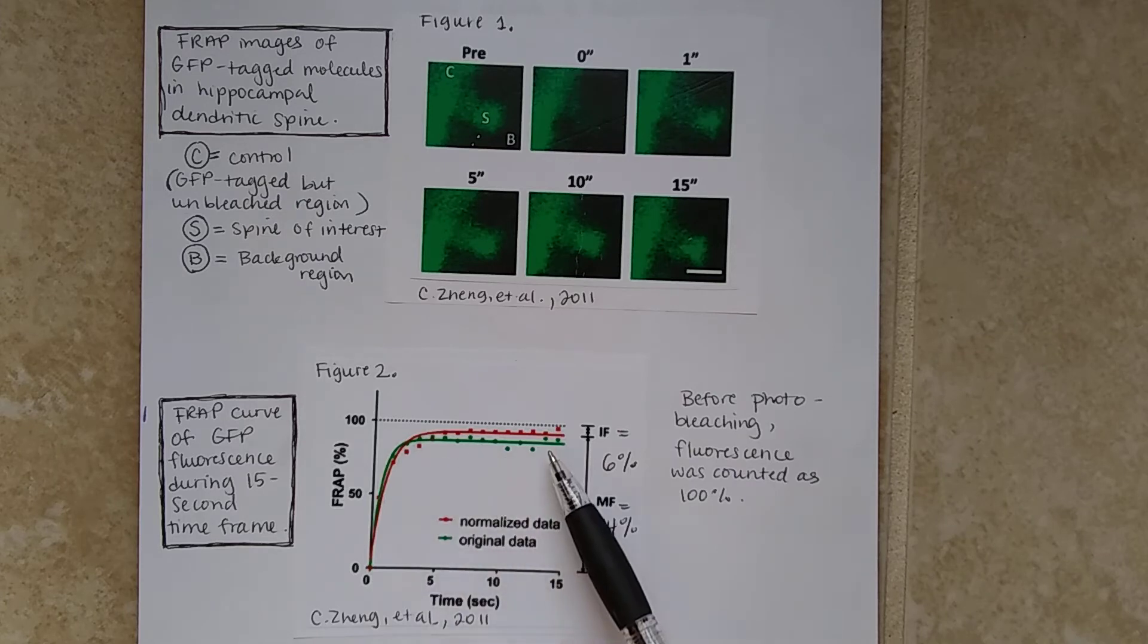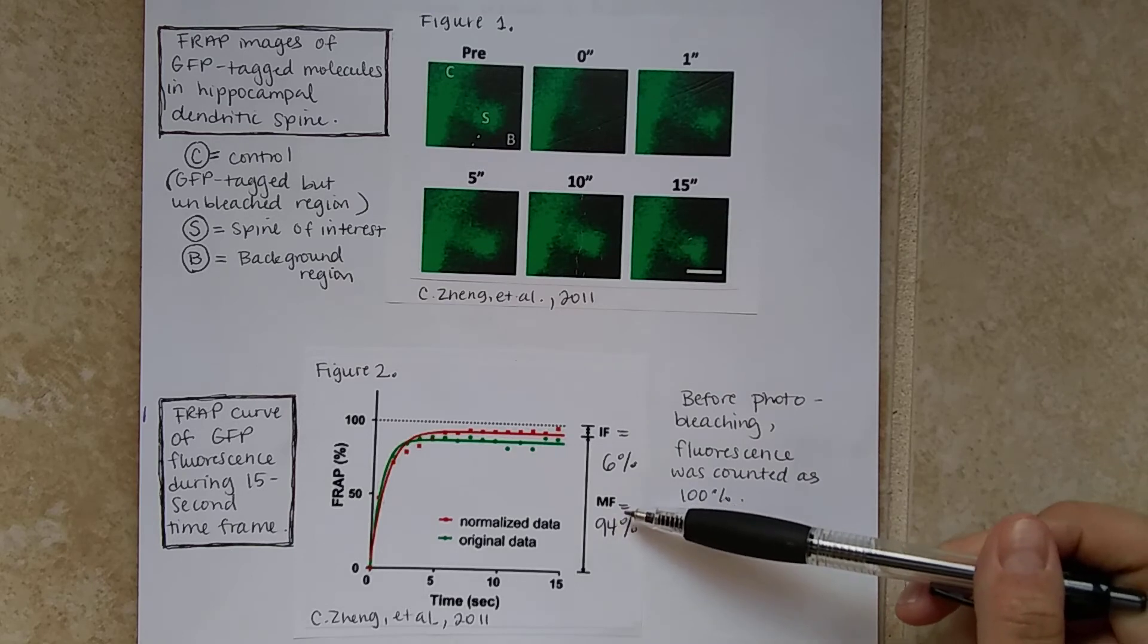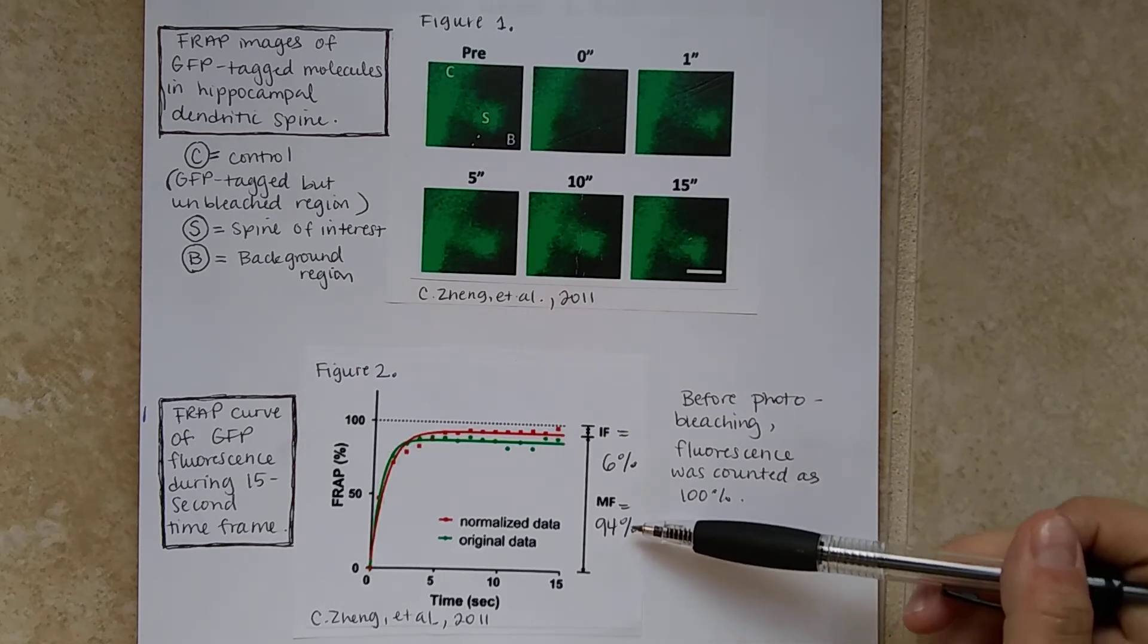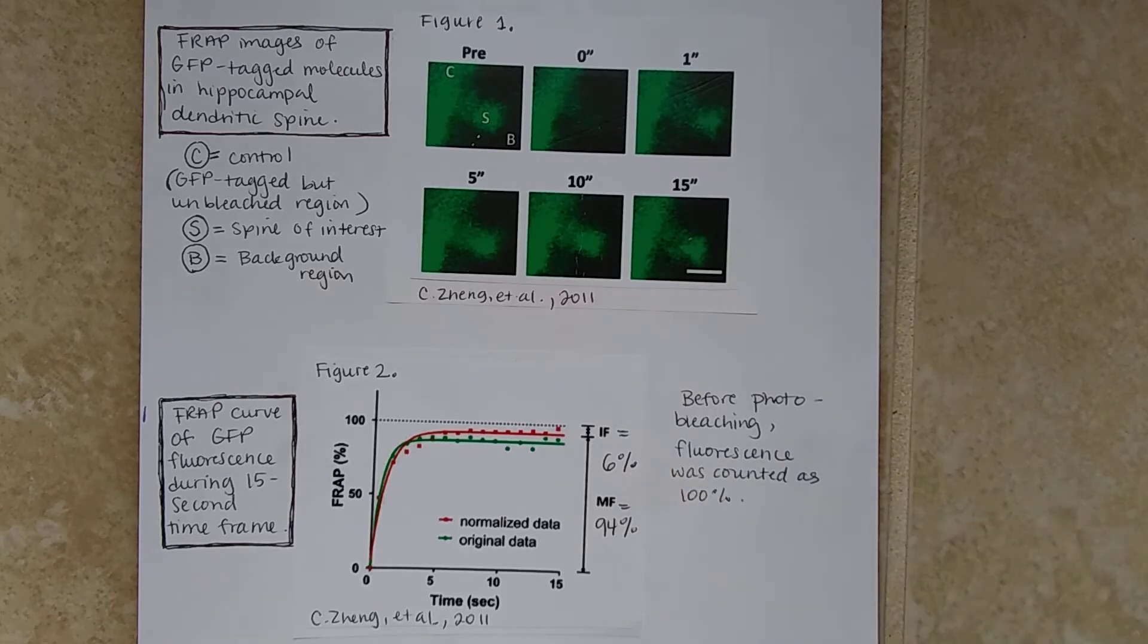Showing that the fluorescence has more or less been recovered. Now, as you can see here, the fluorescence has not been recovered to 100%, meaning that it is not the same as before it was photobleached. But you can see that the mobile fraction is at 94%. So this is the fraction that will be contributing to the fluorescence, and the immobile fraction is 6%.